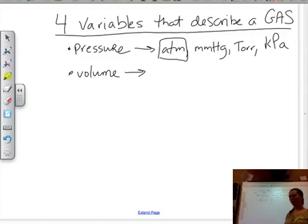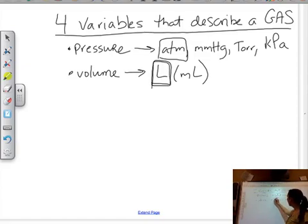A second variable that describes gas: volume. What might we use for volume? What have we used for volume? Liters. Also possibly milliliters, but in terms of gas, we're going to use liters. That's what makes the most sense in our equations, and that's what the equations use when they have constants. Liters and atmospheres are going to be our most common.